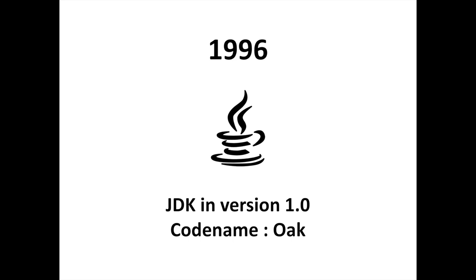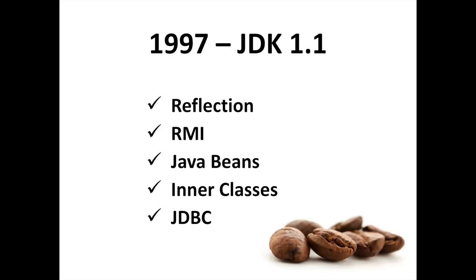Later, Sun also provided a runtime-only package called Java Runtime Environment, JRE. The JDK 1.1 was announced in 1997 with reflection, introspection only, remote method invocation (RMI), Java Beans, inner classes, and JDBC — the Java Database Connectivity API.